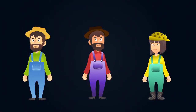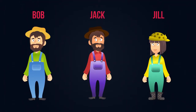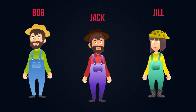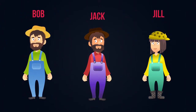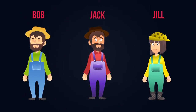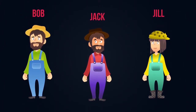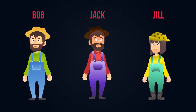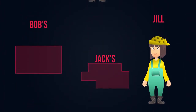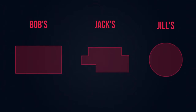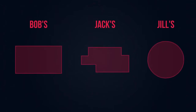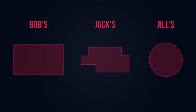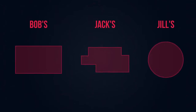Here we have three farmers: Bob, Jack and Jill. They need to fence their fields to stop their sheep from running away. However, they're not too sure how much fencing to buy, especially since their fields have different shapes.